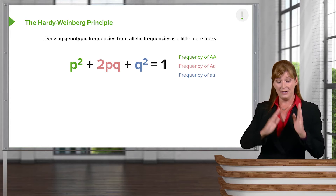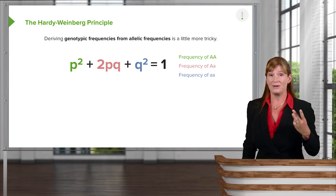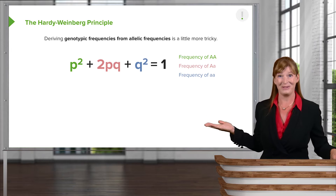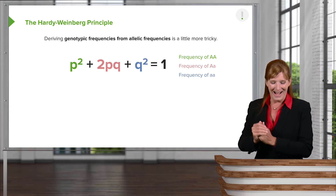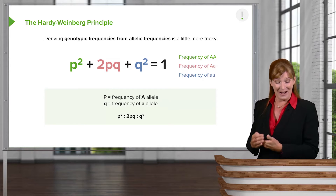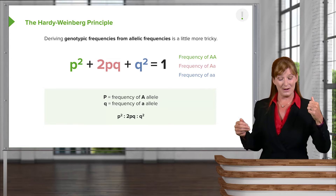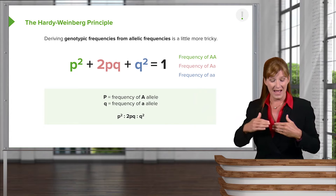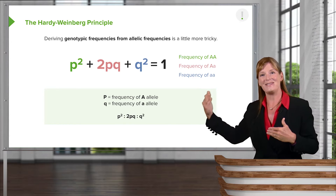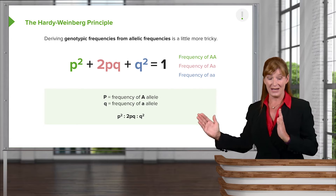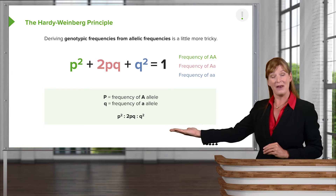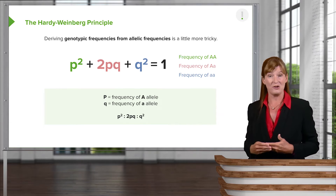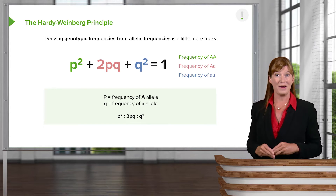So p squared, 2pq, and q squared covers all three of the genotypes we were observing in the table. We can then break it down and say that p is equal to the frequency of A, and q is equal to the frequency of a, such that the whole population is covered by the ratio of p squared, ratio of 2pq, and ratio of q squared. That covers our population — that's how we might note these things.